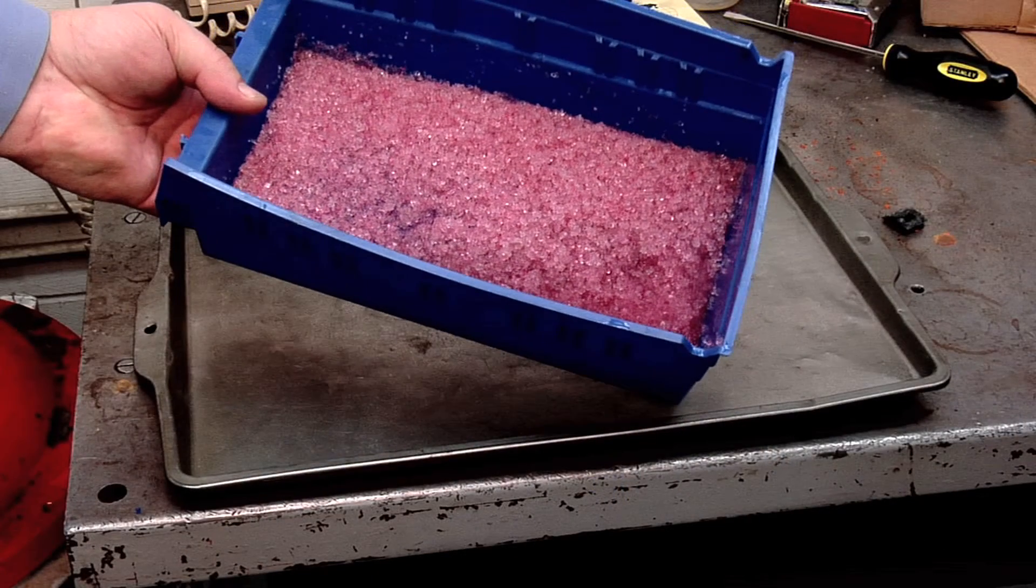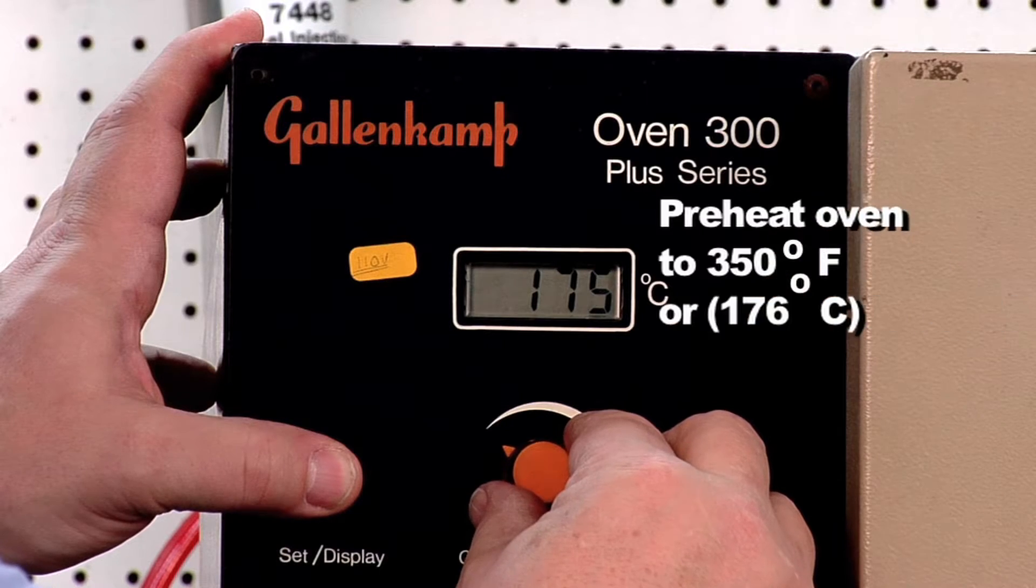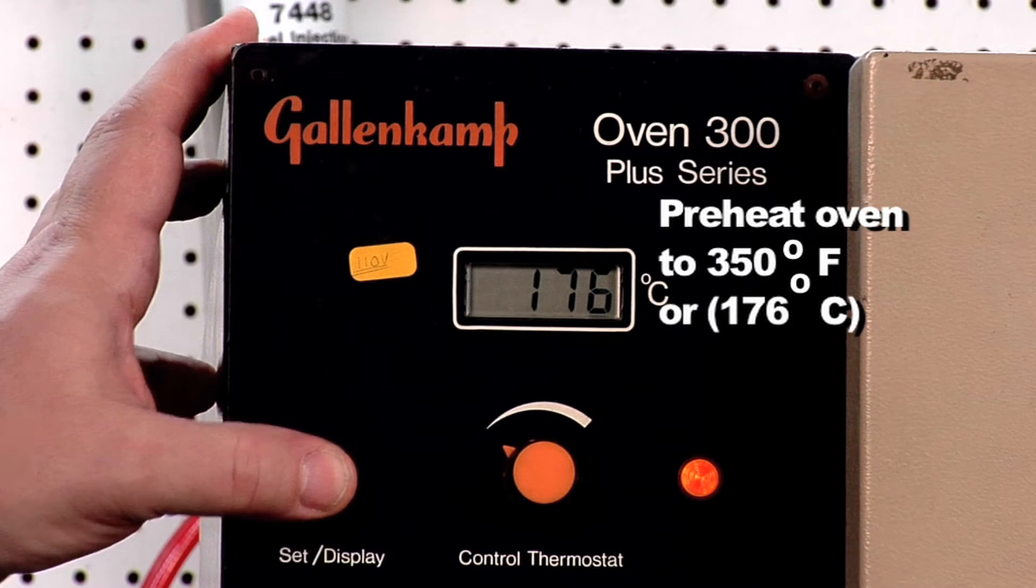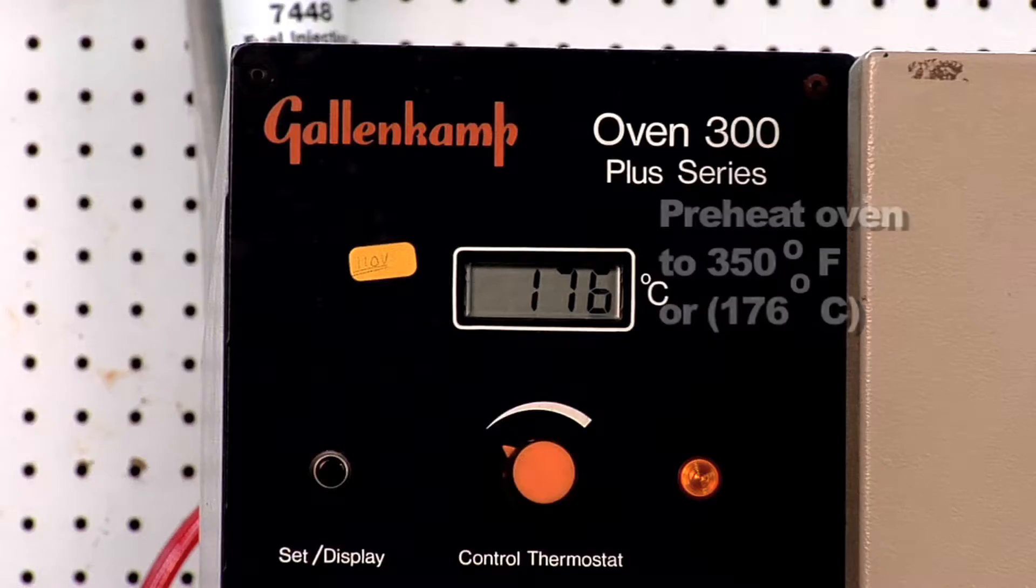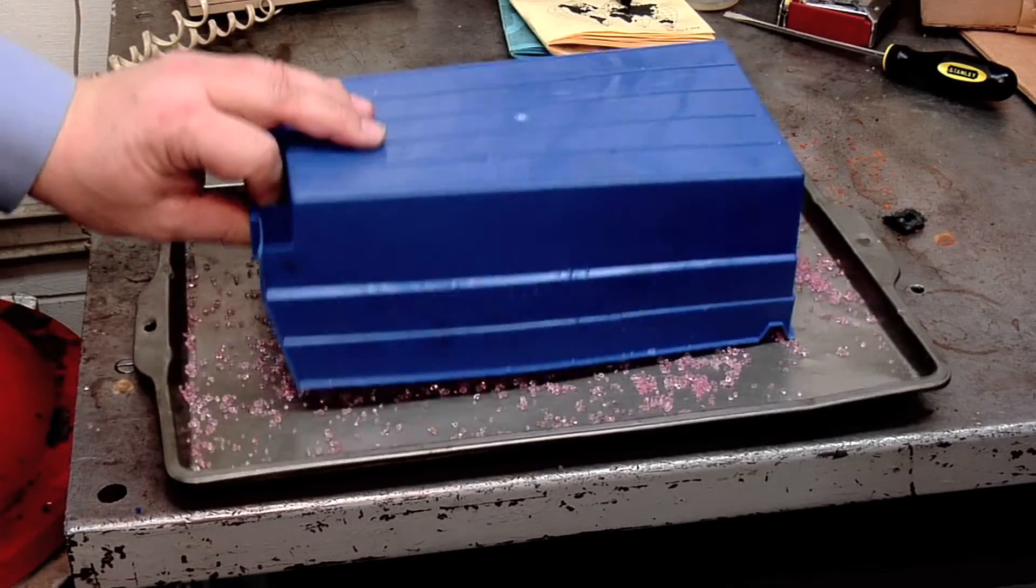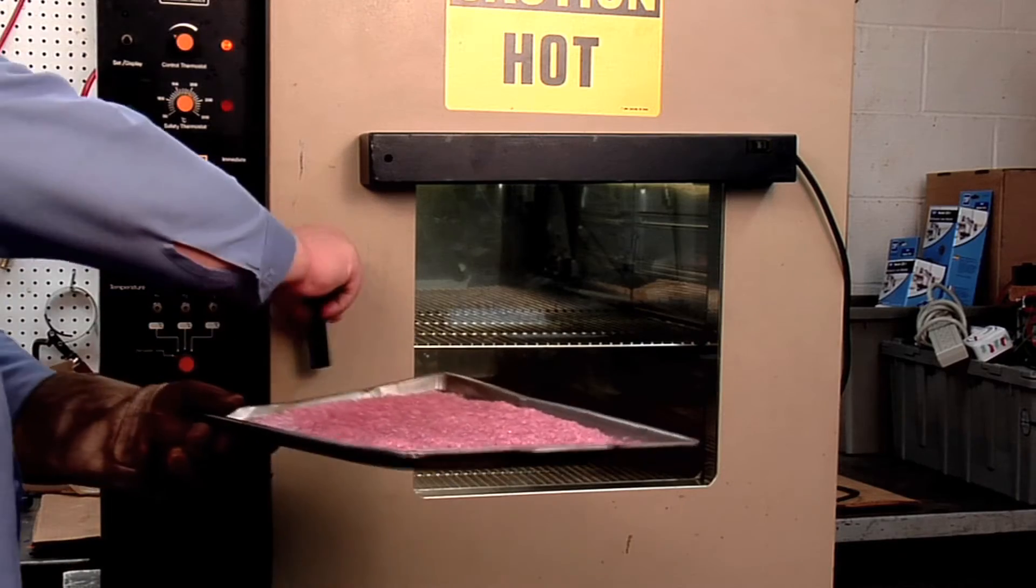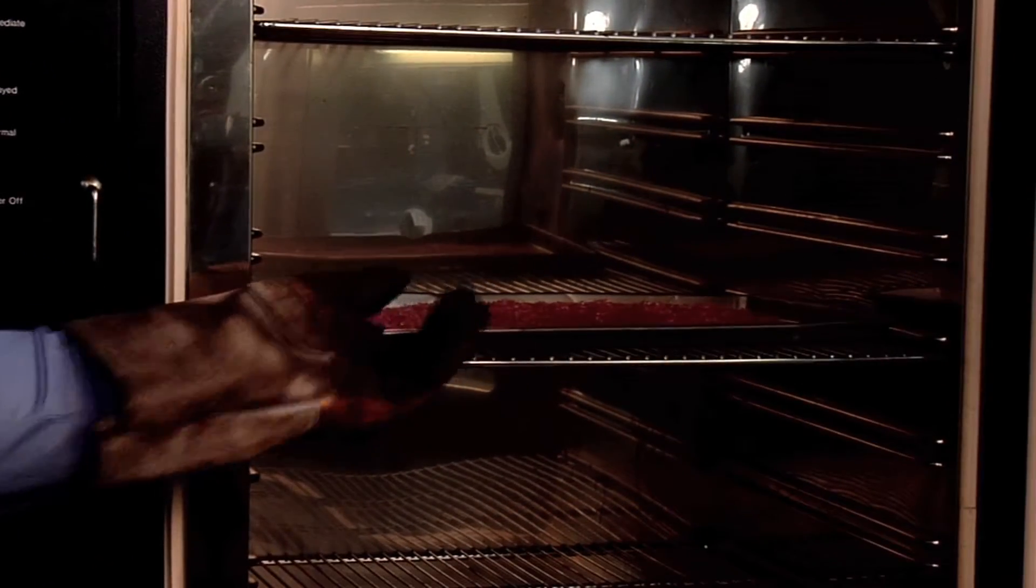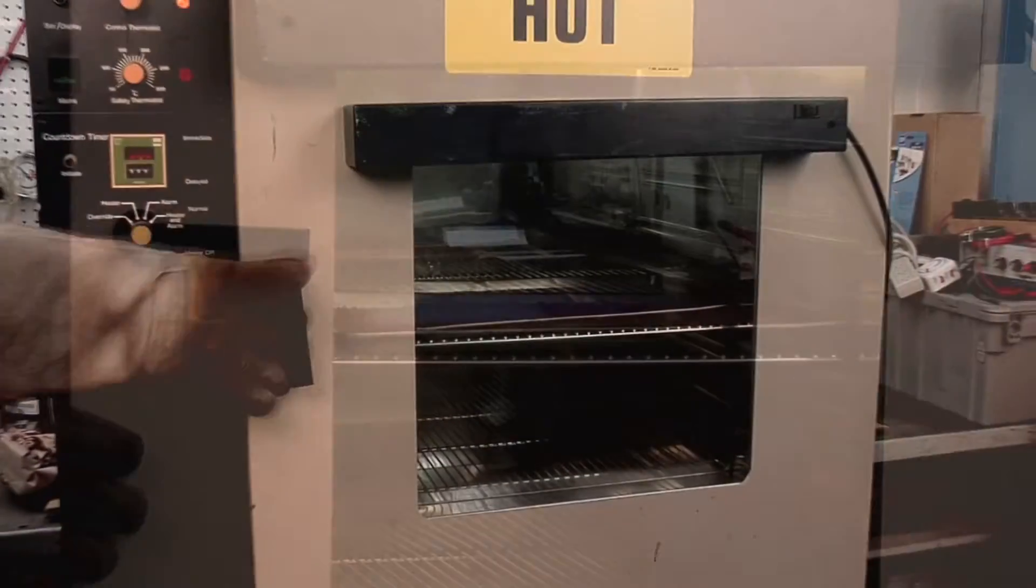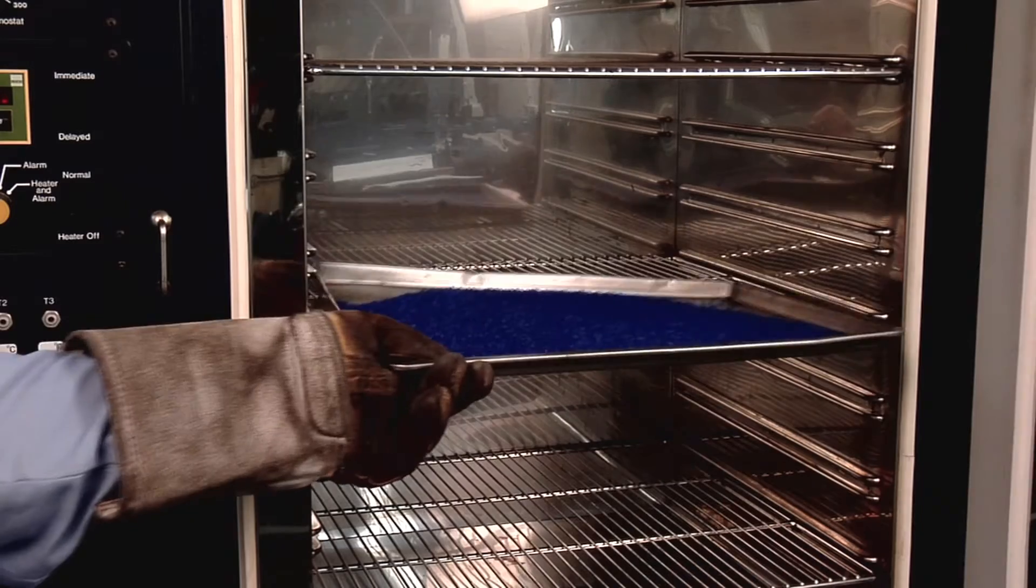Used pink desiccant may be recycled for longer use by heating it in an oven until the blue color returns. Preheat an oven to 350 degrees Fahrenheit or 176 degrees Celsius. Pour the used pink desiccant into a flat pan. Heat the pan of desiccant in the oven for three hours or until the desiccant's color has changed from pink to blue. Remove the desiccant from the oven and allow it to cool down to room temperature.